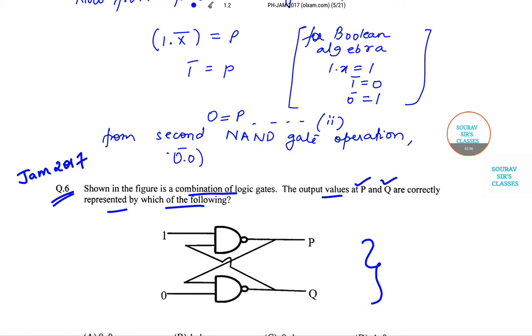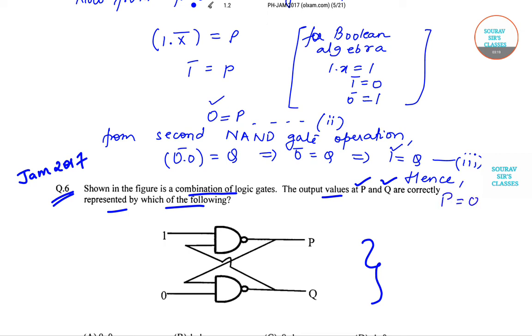From the second NAND gate equation: 0·x = Q, this implies 0 = Q, this implies 1 = Q. And this is marking it as Roman 3. So we have, hence P·Q, P is equal to 0, so let me write: hence P = 0, Q = 1. Let us complete the diagram.